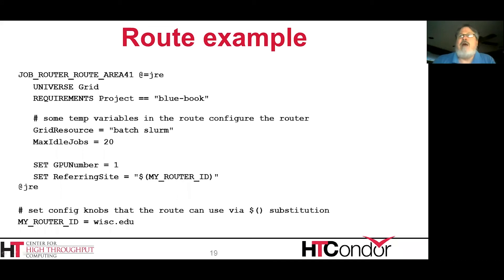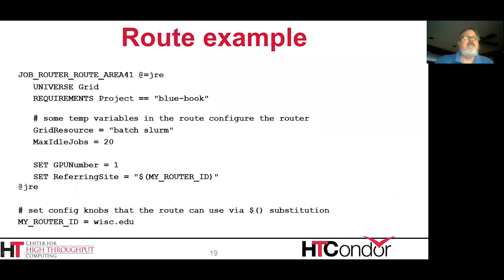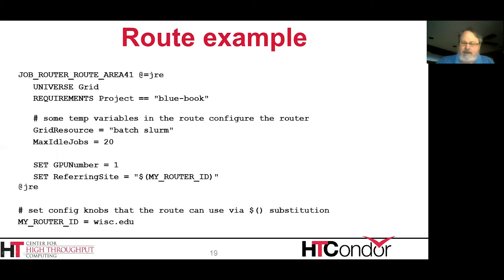Here's an example of a route in the new syntax. The name of this route is 'area41' — that's the tag at the end of the knob name. We say we only want to route jobs that already have 'project blue book' assigned in the job ad, and we route them to a Slurm batch system. This particular batch system has a max_idle set to 20 (the default is about 100). We then set a couple of attributes into the job ad — one of them picks up the knob MY_ROUTER_ID from the regular Condor config and uses it as the value via dollar substitution, which is expanded when the route is applied.